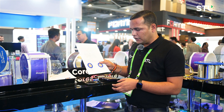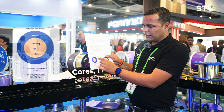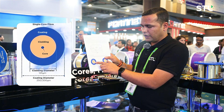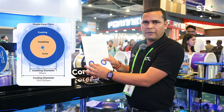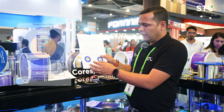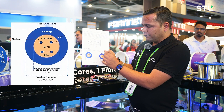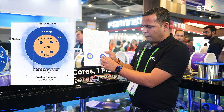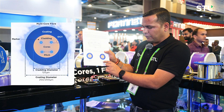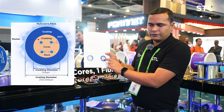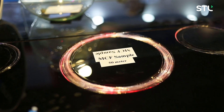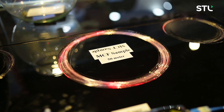For example, a standard single-mode fiber has a cladding diameter of 125 microns. We have developed a four-core fiber that fits all four cores inside that same common cladding diameter of 125 microns.